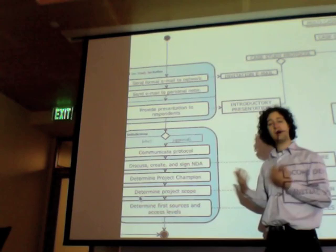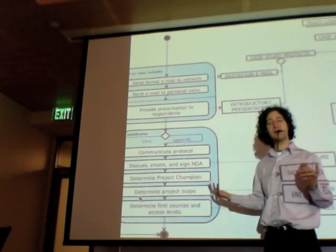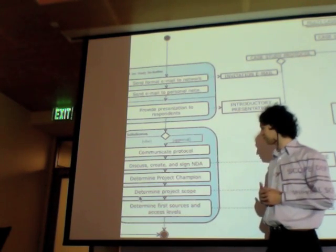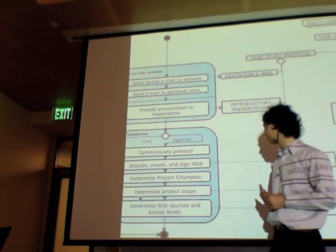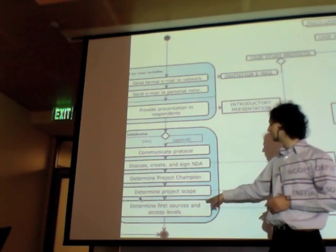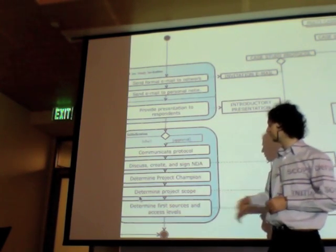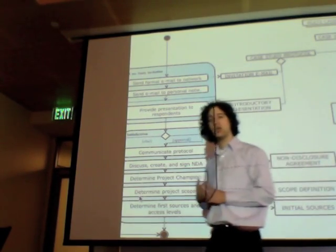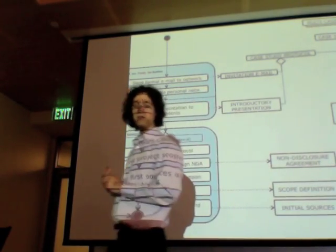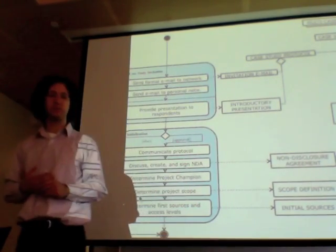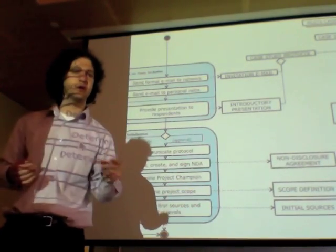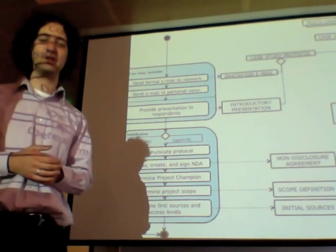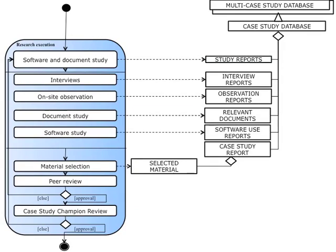Determine the project scope: how long is it going to take, how much time, how many interviews, and then you start determining your first sources and access levels. The cool thing is, if you have a good project champion, he will start mentioning people quite relatively soon.